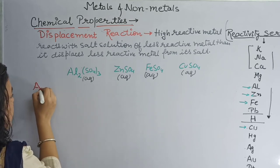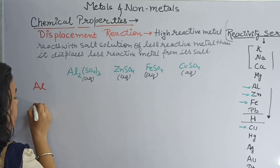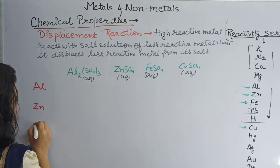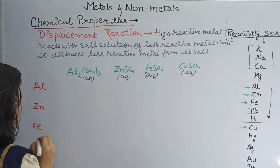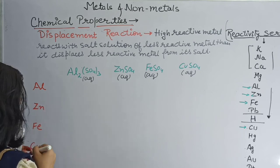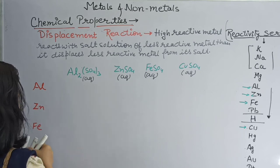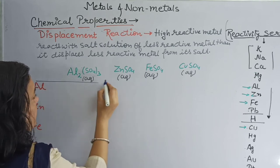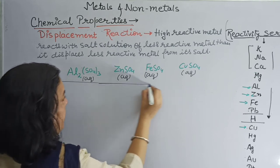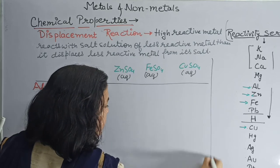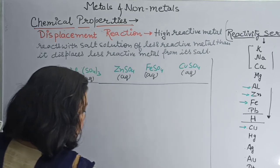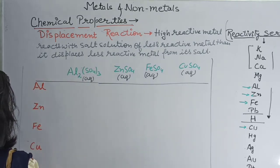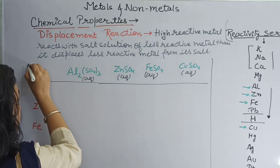We will take sulfate solution of each metal: aluminium sulfate Al2(SO4)3, zinc sulfate ZnSO4, iron sulfate FeSO4, and copper sulfate CuSO4 — all in aqueous state. The reactions are explained in tabular form with metals aluminium, zinc, iron, and copper.